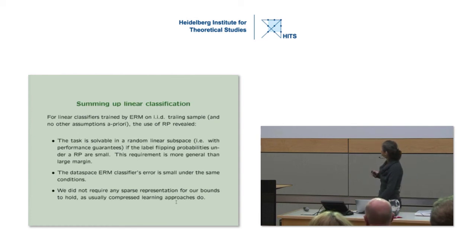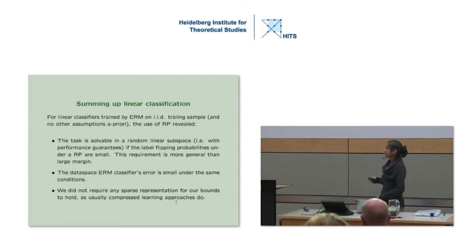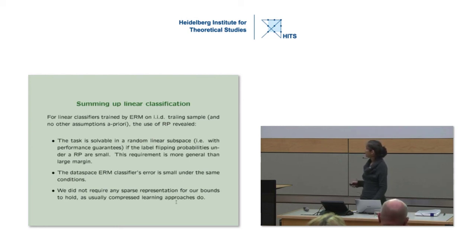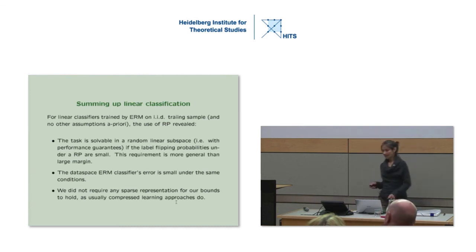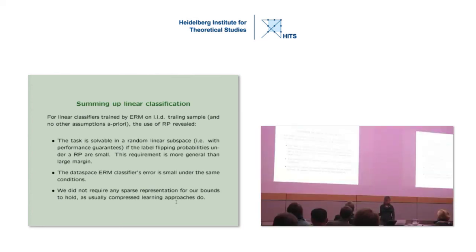To summarize what we have seen so far: if the task is solvable on a random subspace, the label flipping probability is the key quantity explaining when and why that works. In the original data space, the same quantity explains when and why a problem is easier than others. We don't need any sparse representation conditions for the bounds to hold—the bound always holds, and if we have sparse representation or other structures, the bound tightens and becomes better.